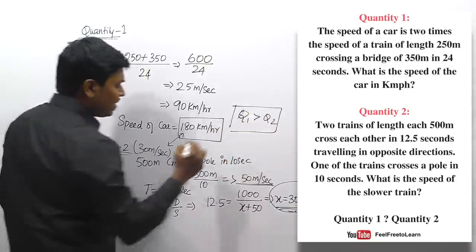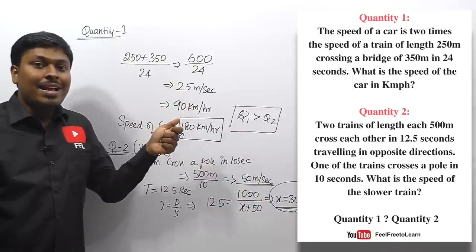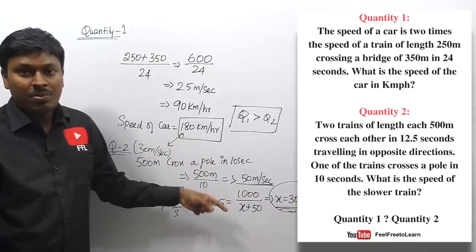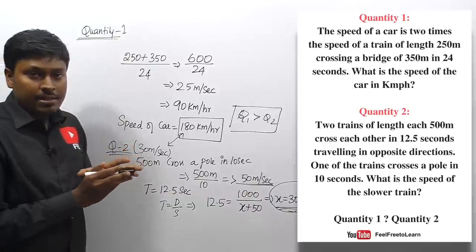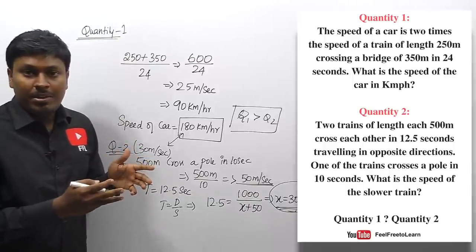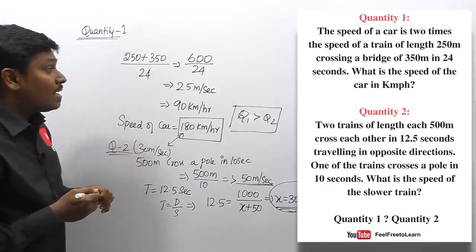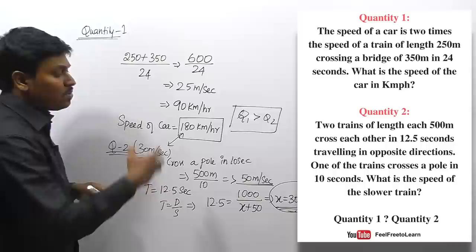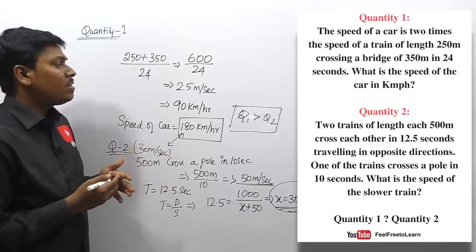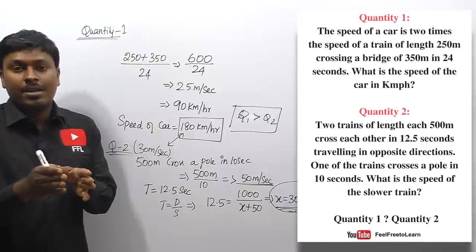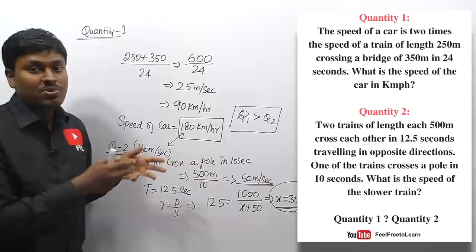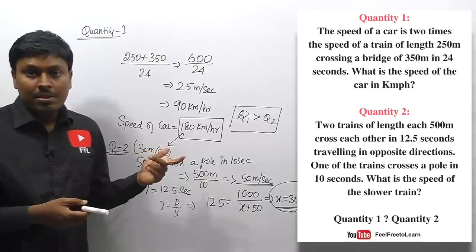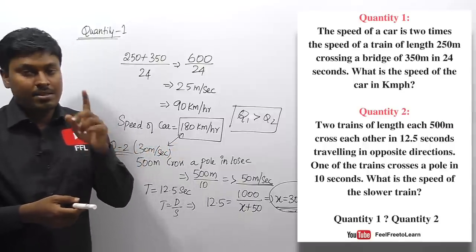Quantity one = 180 km/h, quantity two = 30 m/s. Since quantity one is in km/h and quantity two in m/s, and 180 km/h is clearly much larger than 30 m/s (which is only 108 km/h), quantity one is greater than quantity two. Always try to solve each question within one to two minutes in the exam.